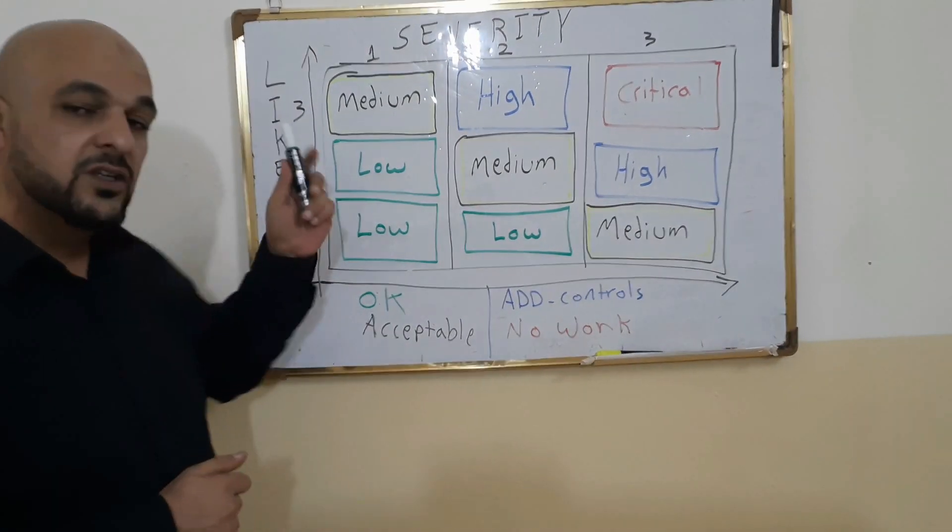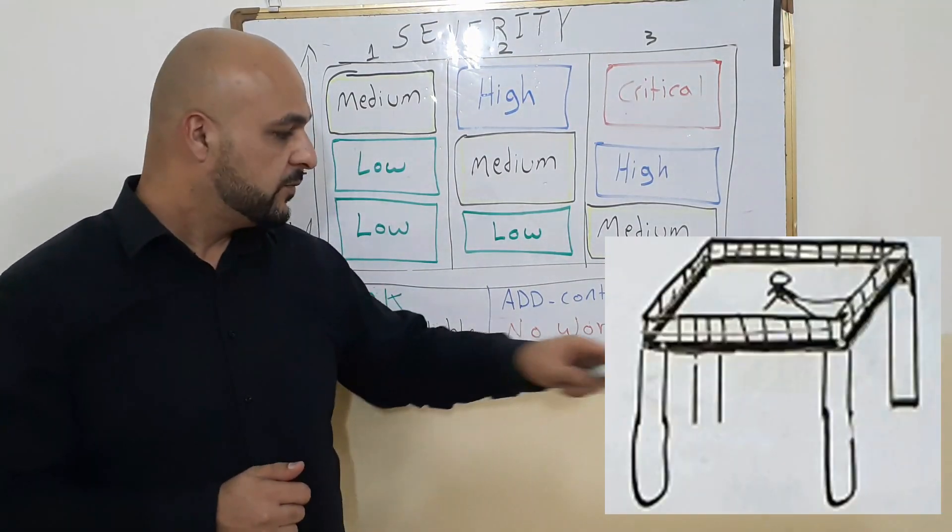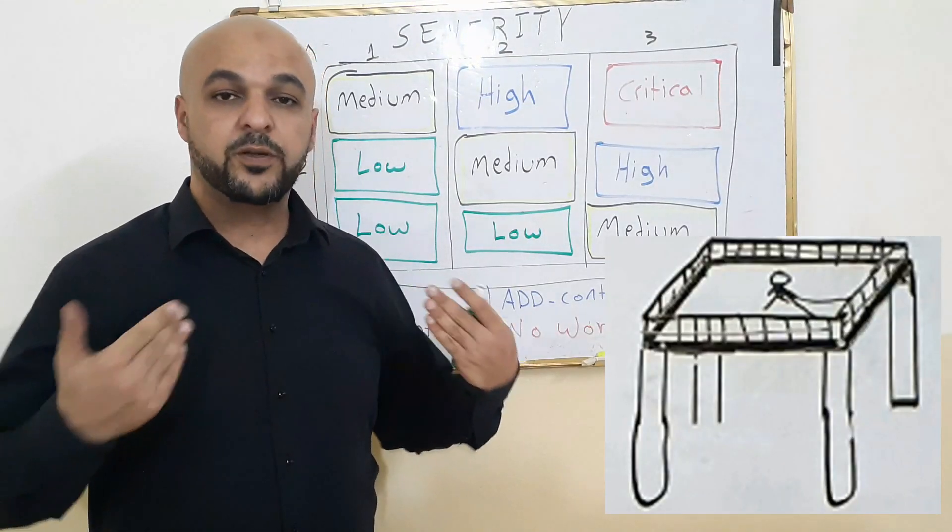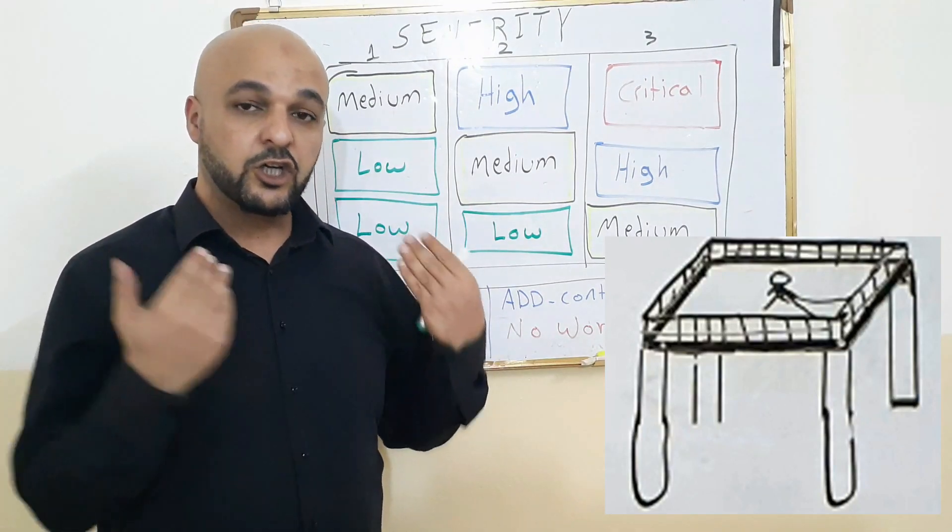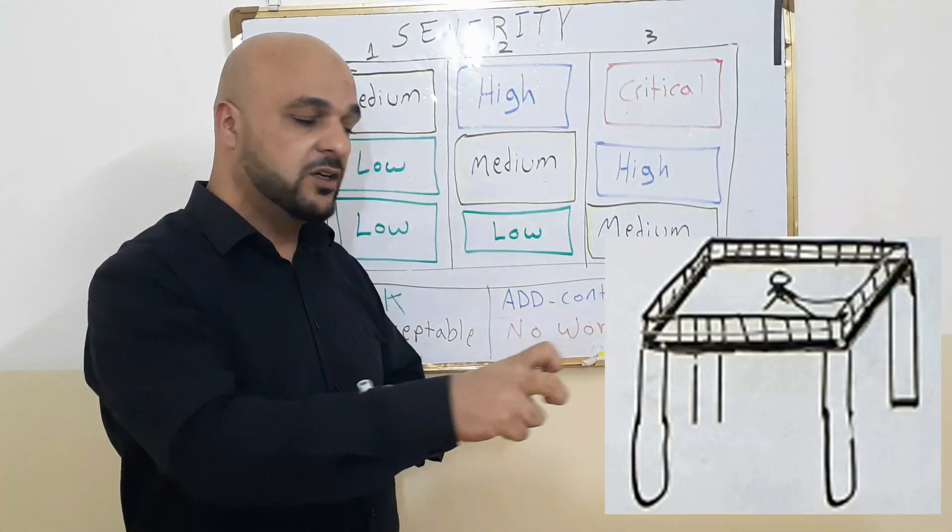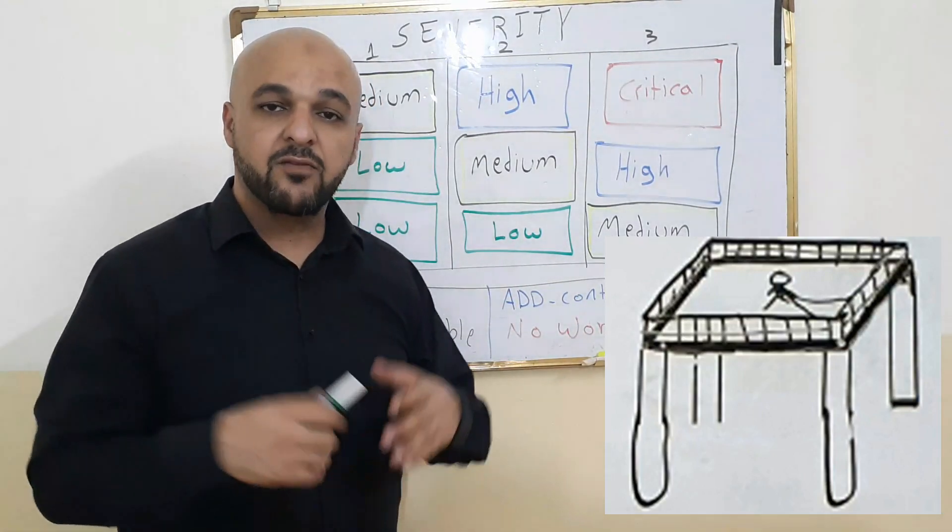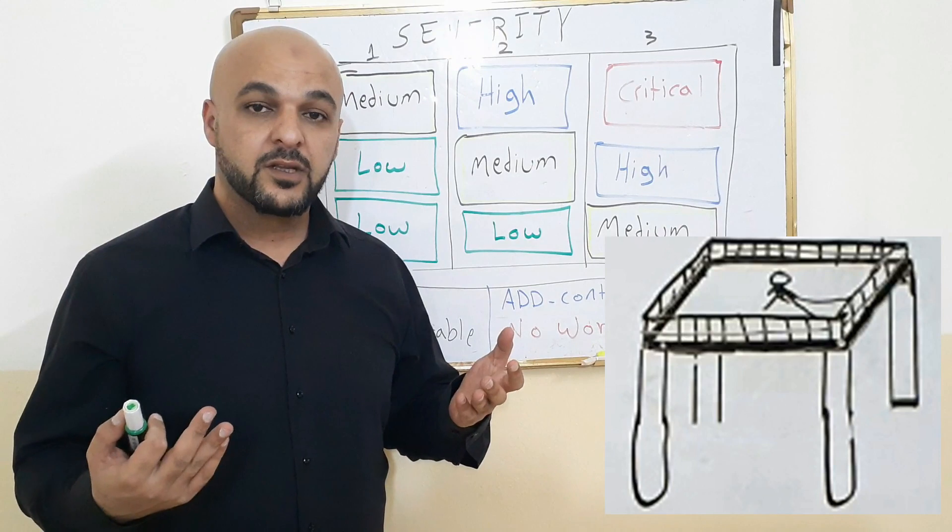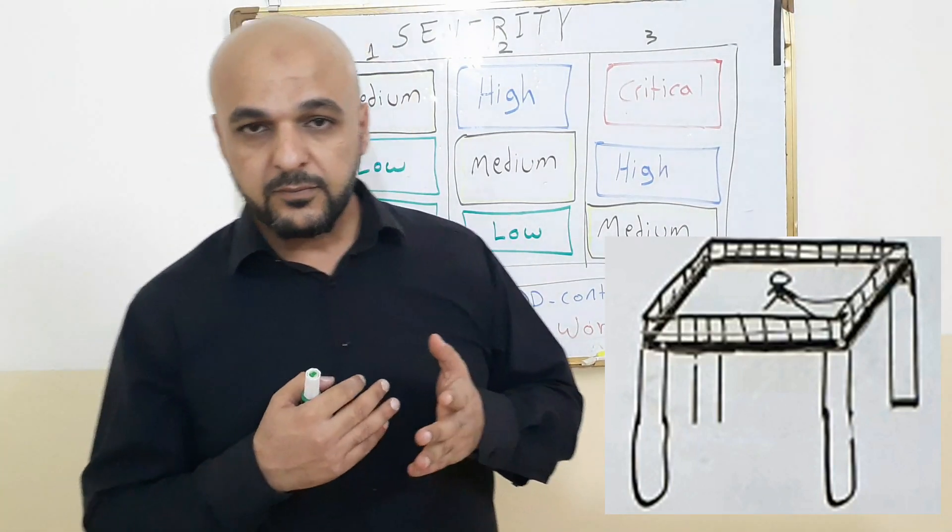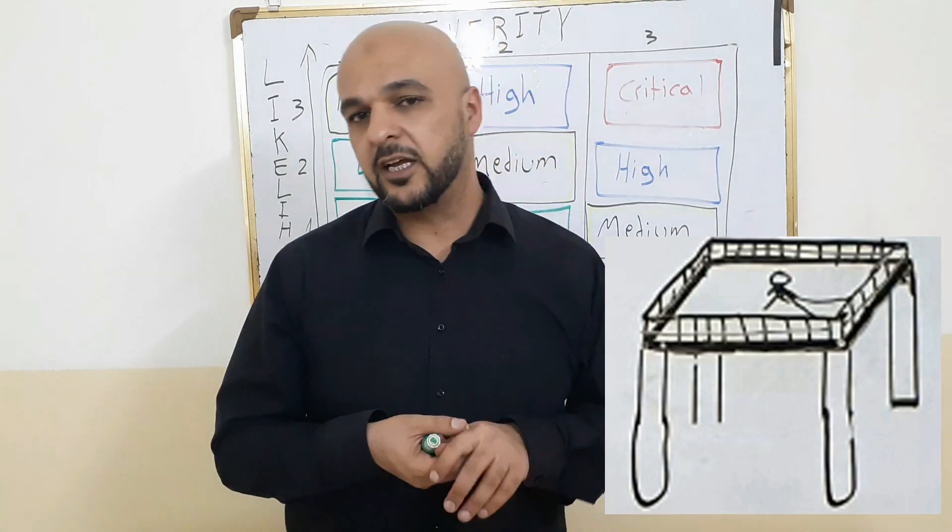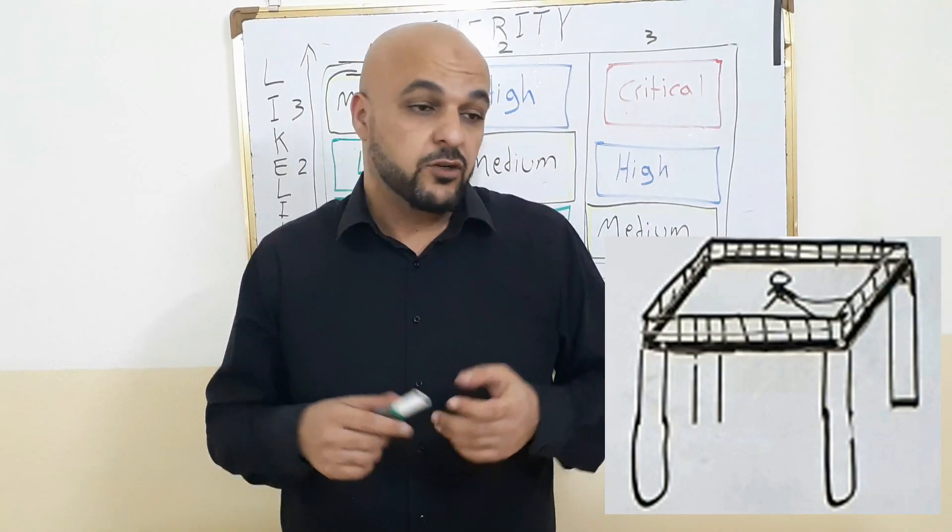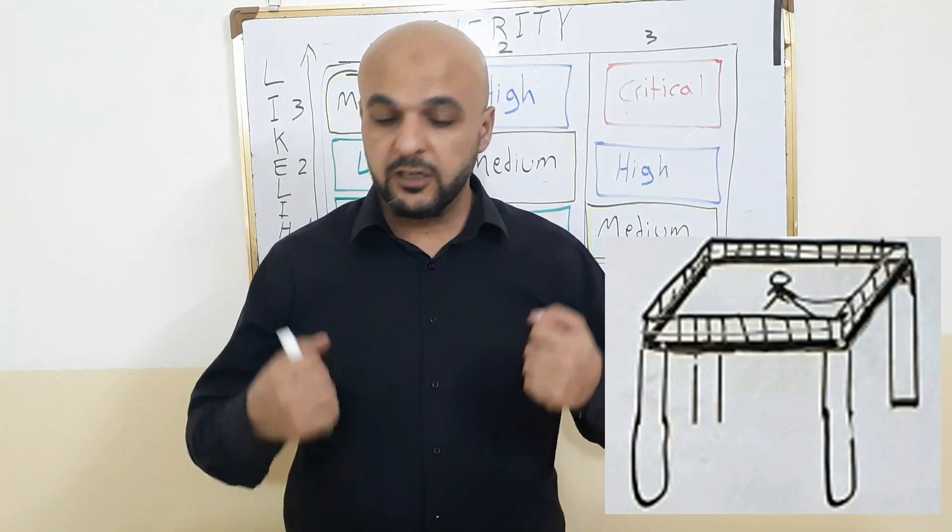So on the first situation, on the first situation where we have full PPE, the guard rails are good. He's wearing his full body harness. He's connected. The ground is level. It's good. How likely is it for him to fall? I say it's not likely.